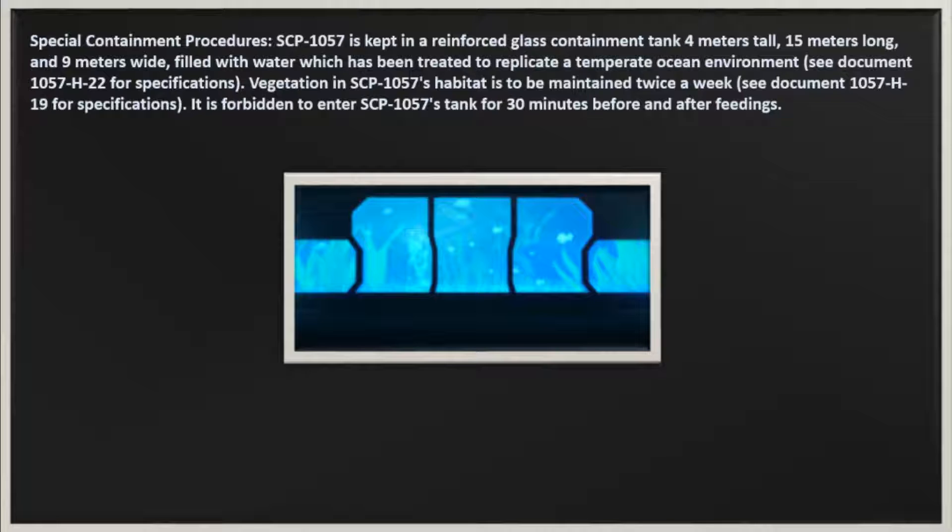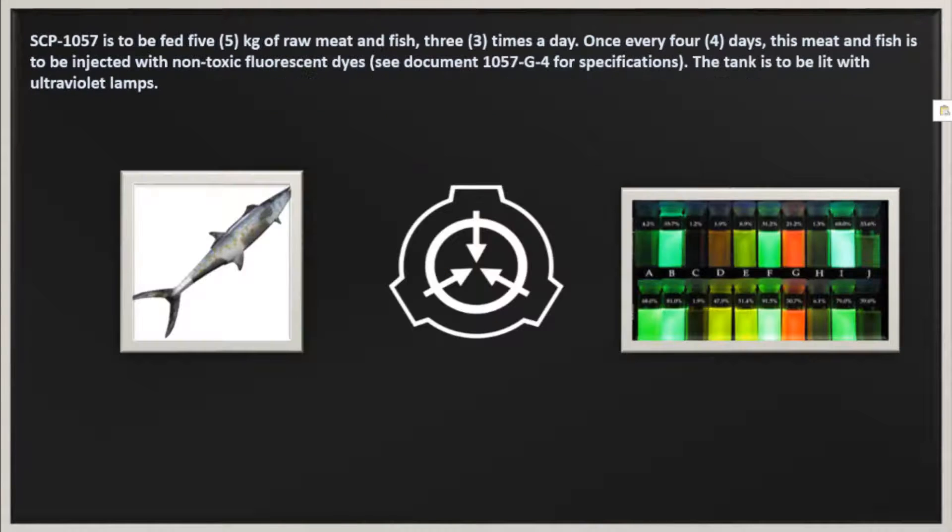Vegetation in SCP-1057's habitat is to be maintained twice a week. See Document 1057-H19 for specifications. It is forbidden to enter SCP-1057's tank for 30 minutes before and after feedings.